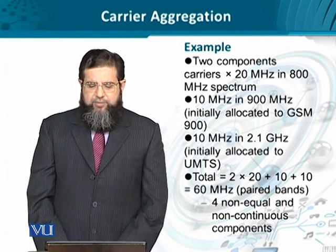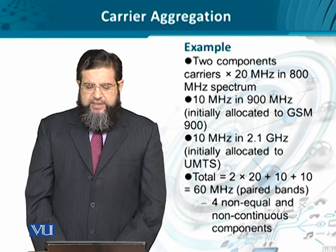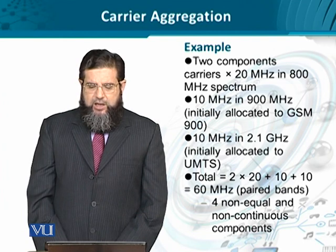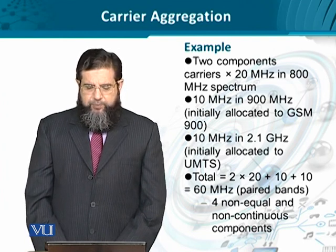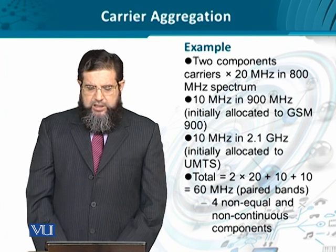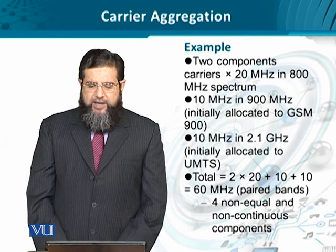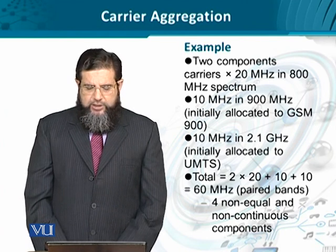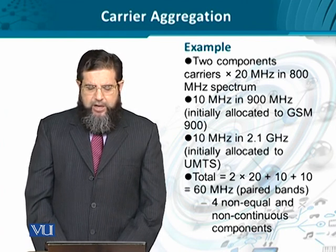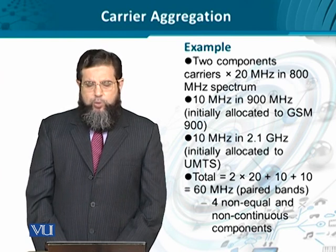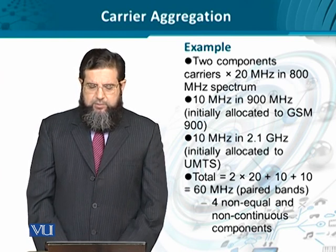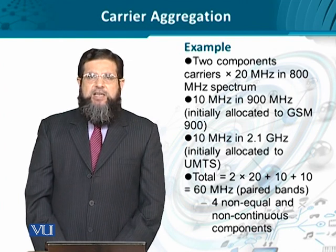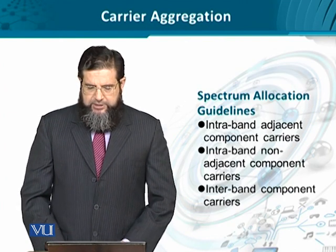Then we have a resultant of up to 60 MHz bandwidth. What we have done here is taken 4 carrier components: two from the 800 MHz band, one from the 900 MHz band, and another one from the 2.1 GHz band. Using these 4 components, we have achieved up to 60 MHz. We could go up to 100 MHz, but this example shows that we are not limited to choosing a certain number of carriers within a single band.